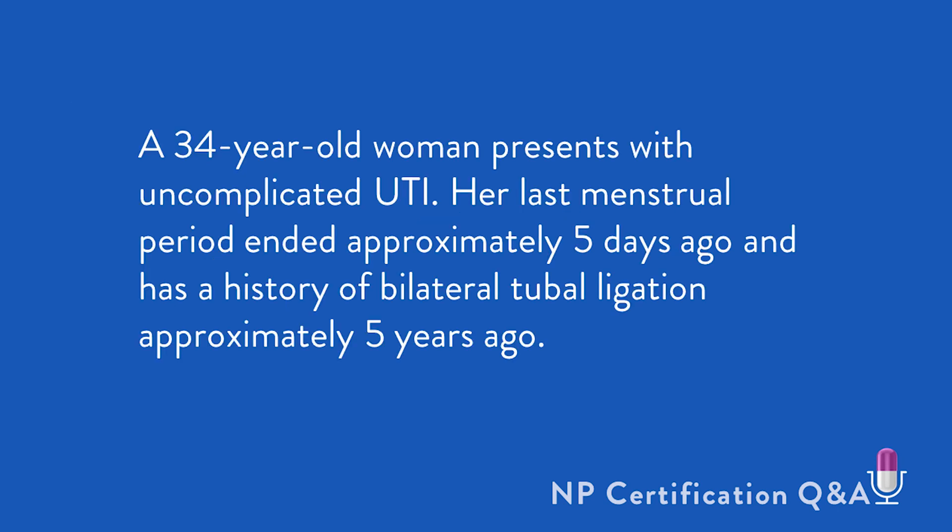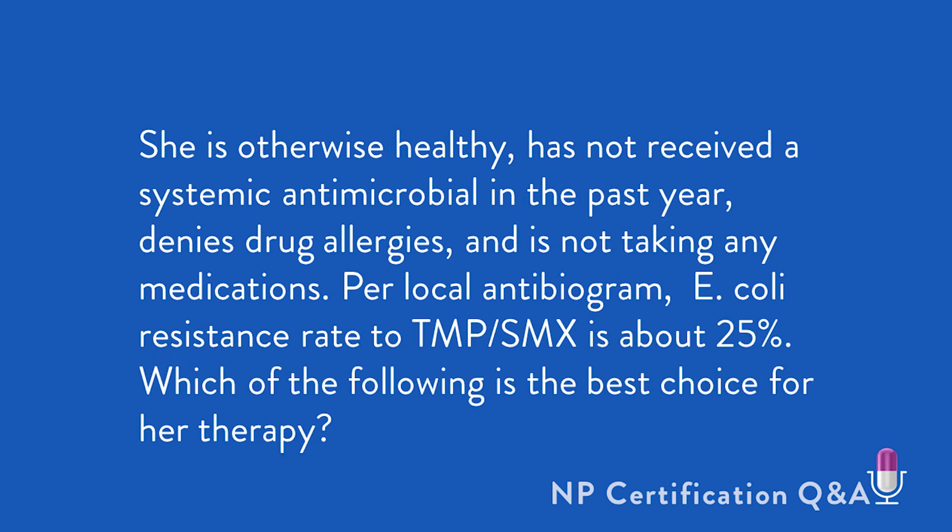A 34-year-old woman presents with an uncomplicated UTI. Her last menstrual period ended approximately five days ago, and she has a history of bilateral tubal ligation performed about five years ago. She's otherwise healthy, has not received a systemic antimicrobial in the past year, denies drug allergies, and is not taking any medications. Per local antibiogram, the E. coli resistance rate to trimethoprim-sulfamethoxazole is about 25%. Which of the following represents the best choice of therapy?